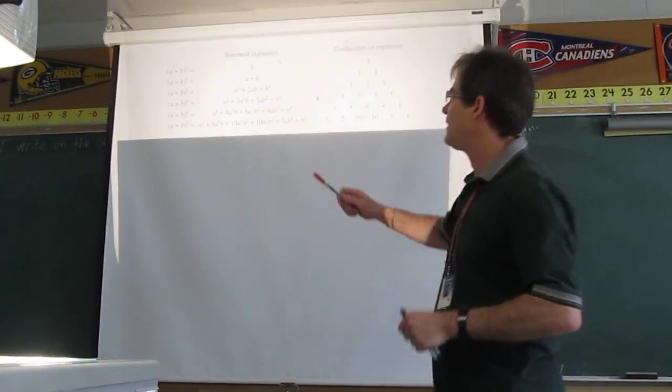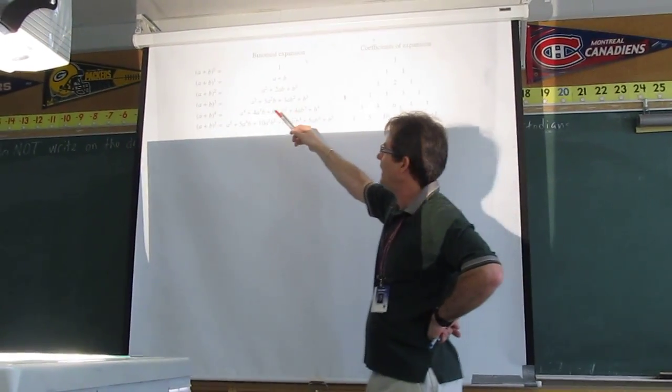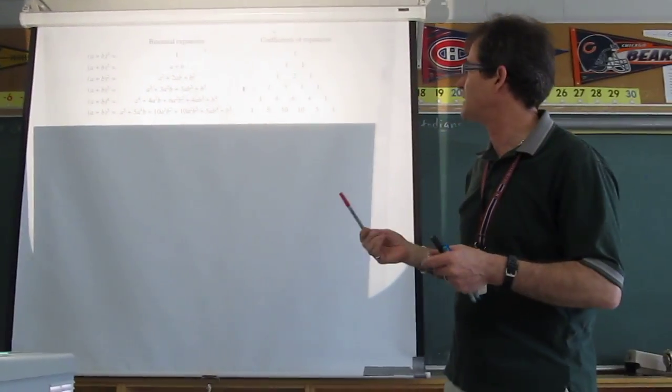So if you look at (a+b) to any exponent and expand it, anything from the 0 is 1, so (a+b)^0 is 1, (a+b)^1 is a+b, and so on.